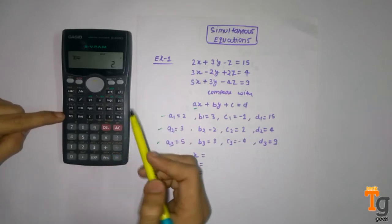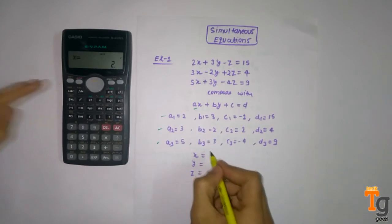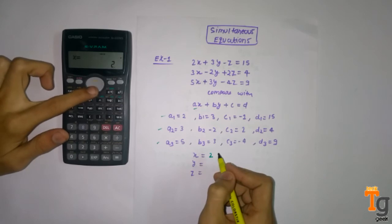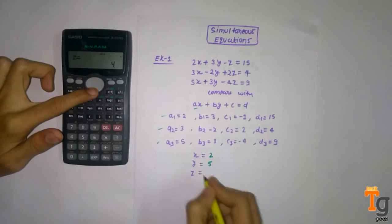Then when you press the equal button you will find all the values. First value is x equal to 1, when you press this button then you will get the value of y which is 5, and then the value of z.